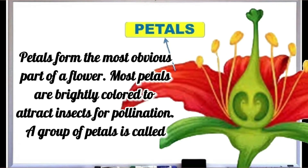Petals form the most obvious part of a flower. Most petals are brightly colored to attract insects for pollination. A group of petals is called corolla.